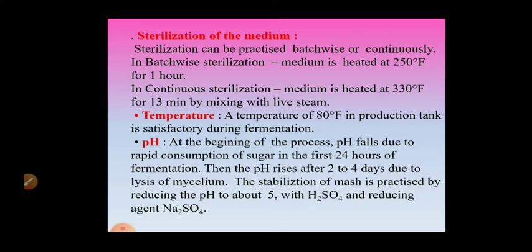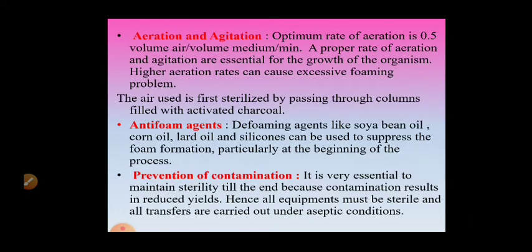Stabilization of the mash is practiced by reducing the pH to about 5 with H₂SO₄ and reducing agent sodium sulfate. Optimum rate of aeration is 0.5 volume of air per volume of medium per minute, as the process is aerobic.